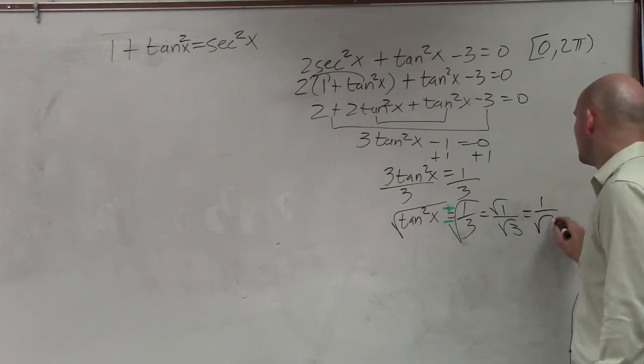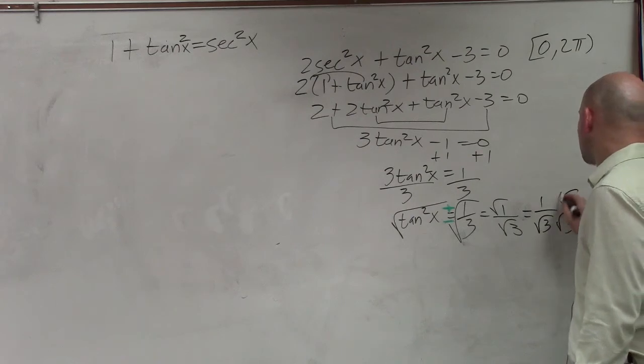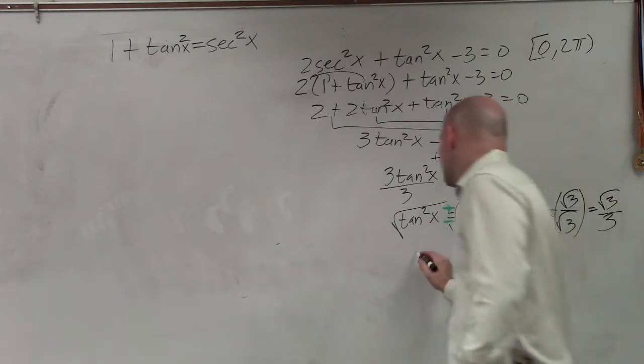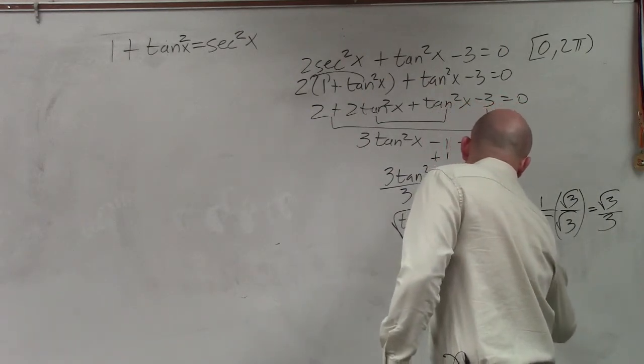So square root of 1 over square root of 3. Square root of 1 is 1. We want to rationalize the denominator, so I multiply by the square root of 3 on the top and the bottom. And therefore, I get √3/3. So I can say that tanx = √3/3.